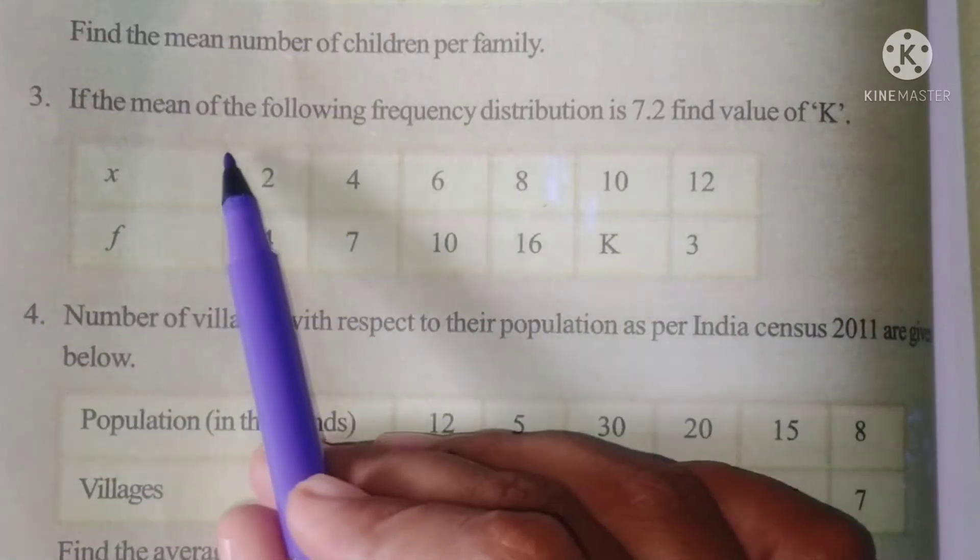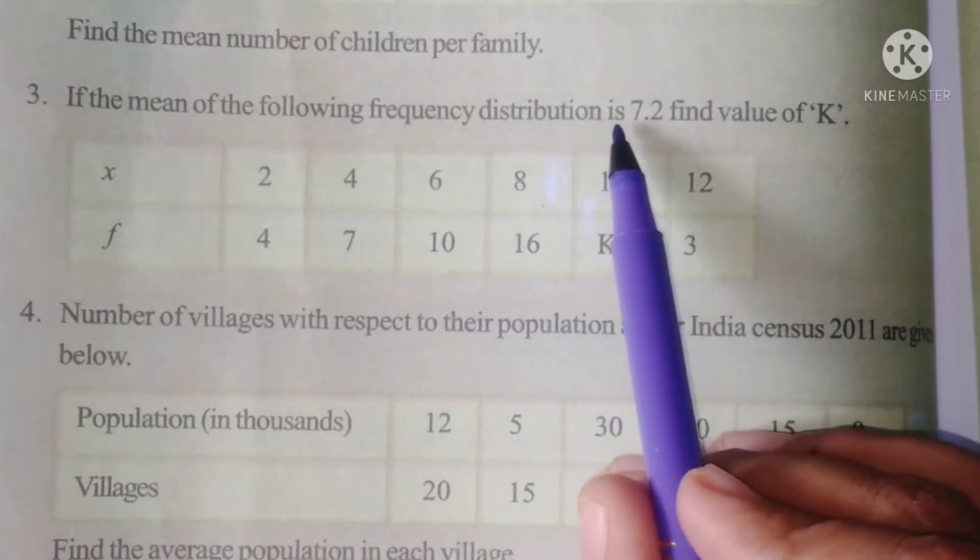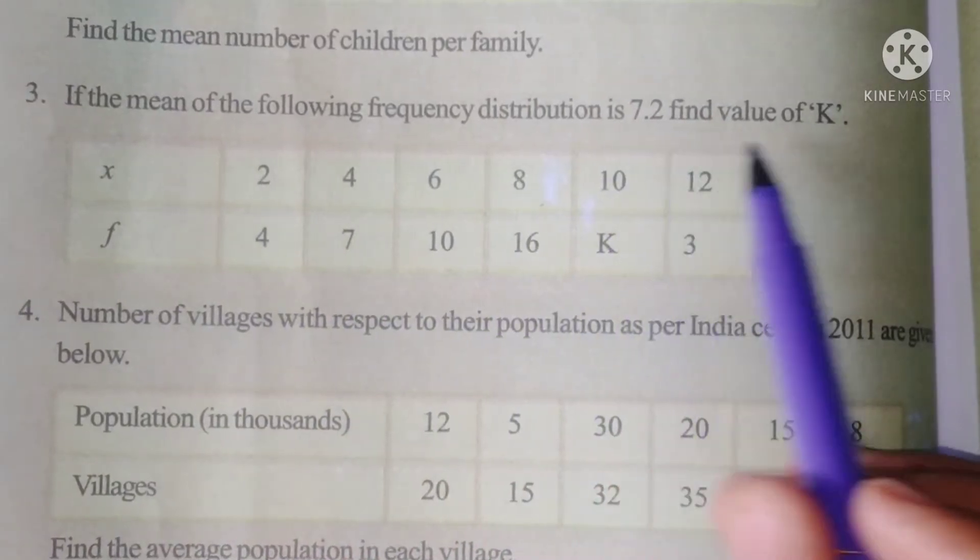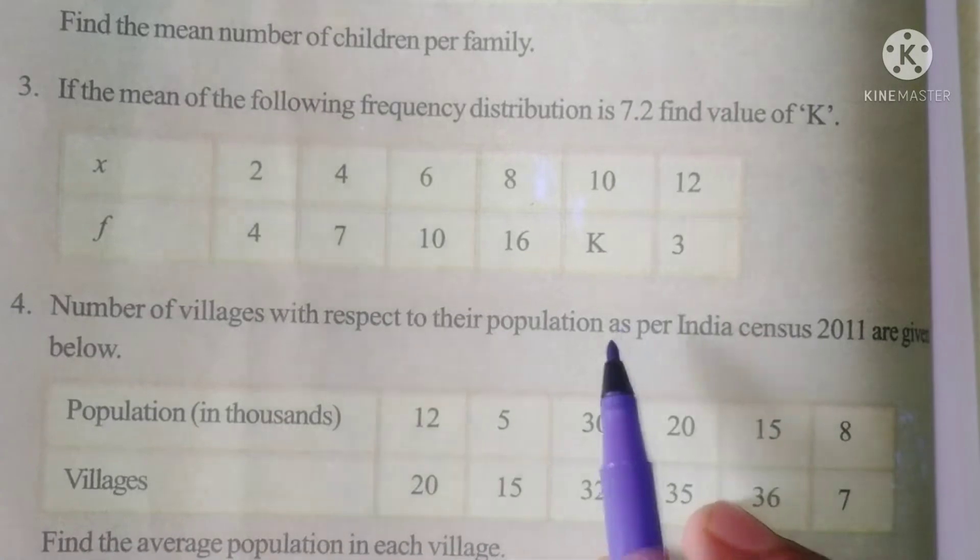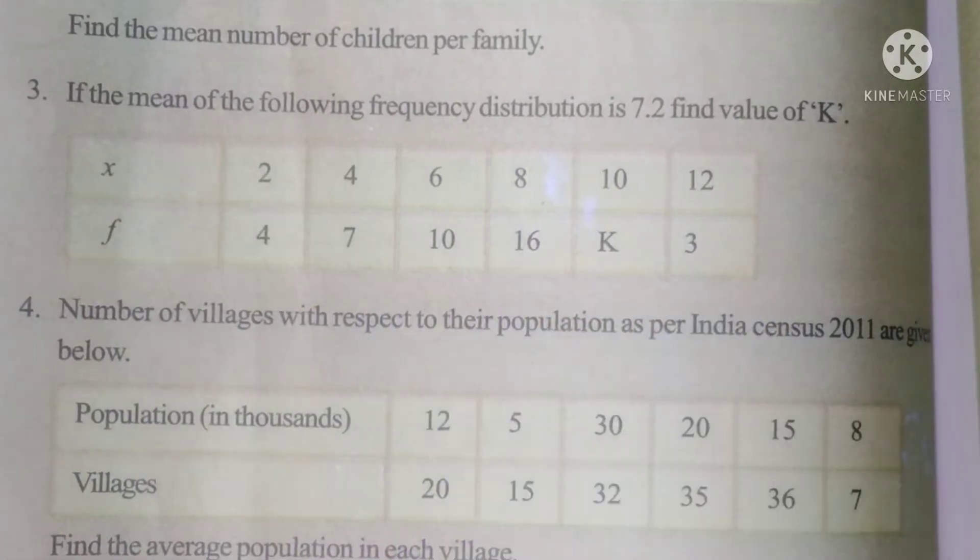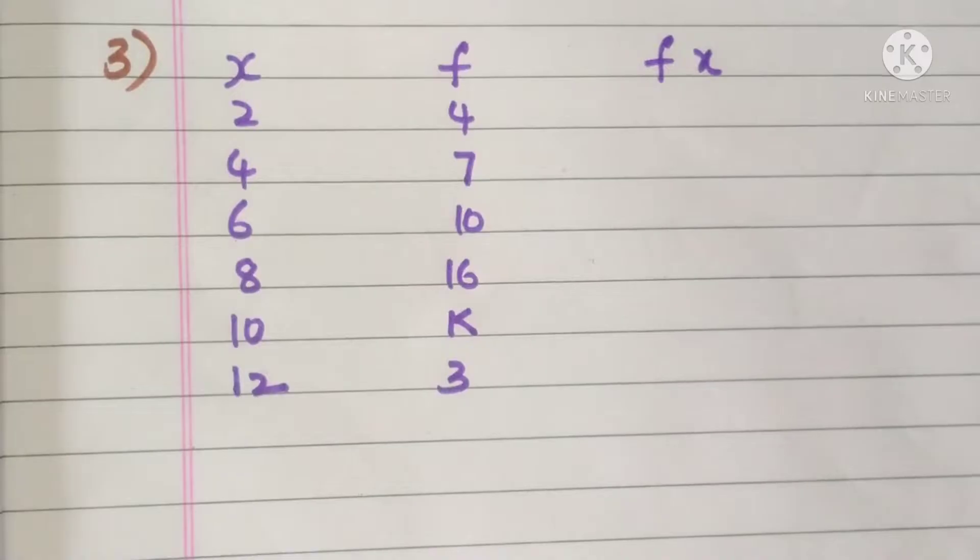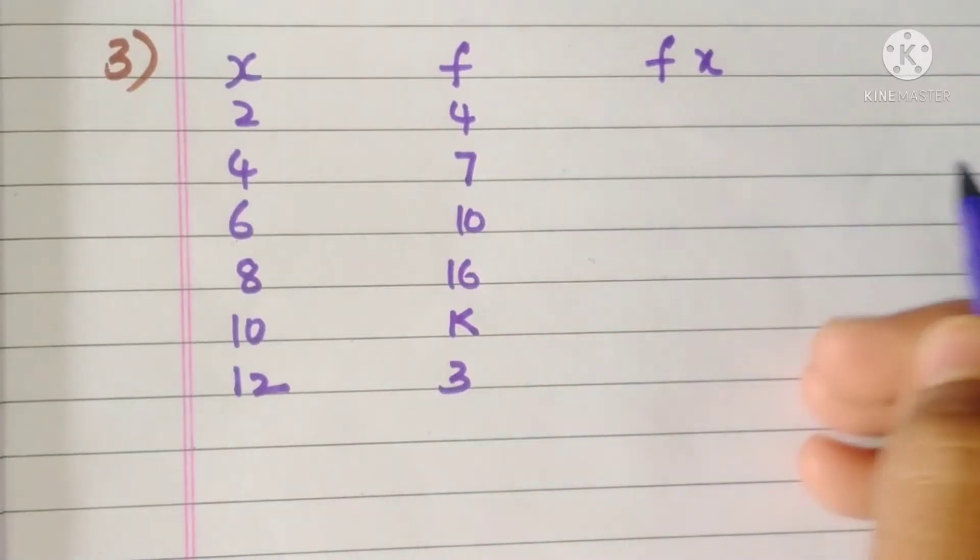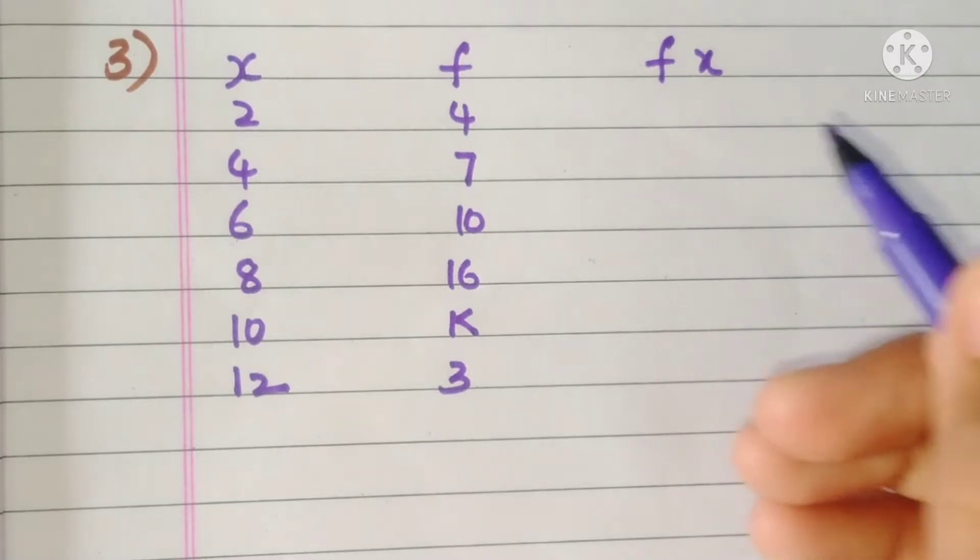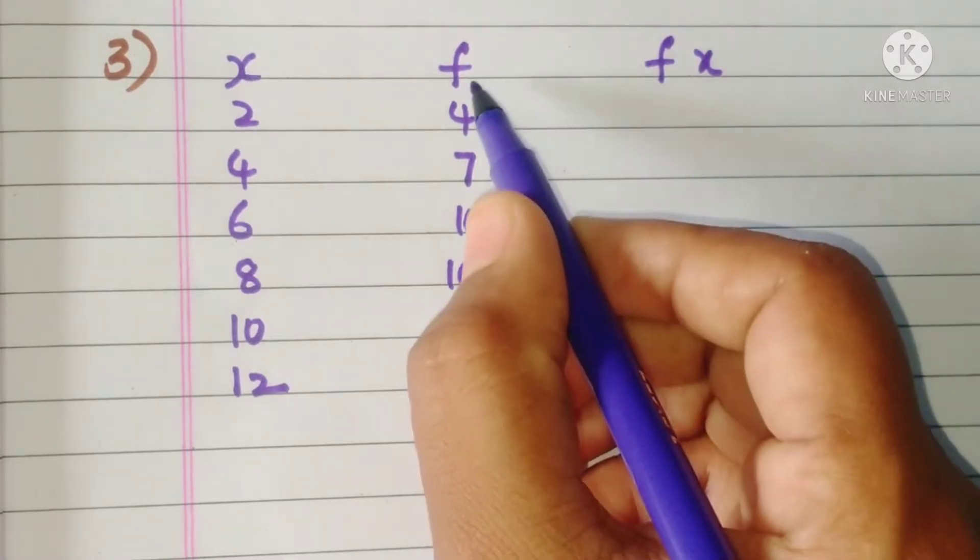Third problem: If the mean of the following frequency distribution is 7.2, find the value of k. So we want to find this value of k here. First, we will calculate the mean. This is f and this is x.